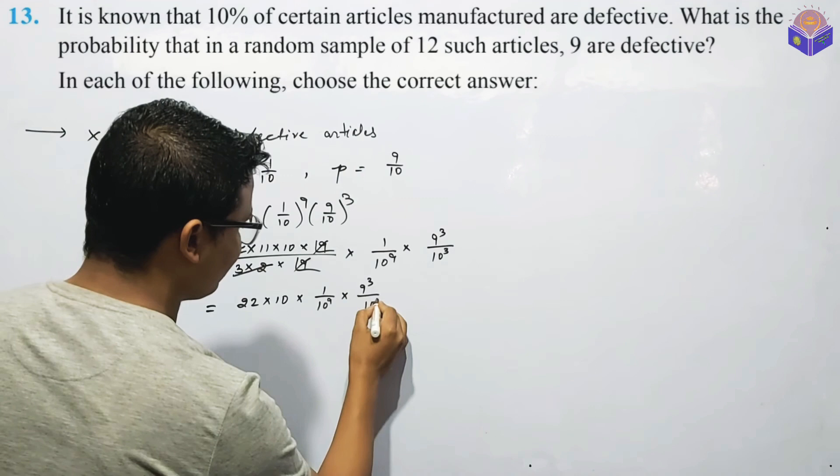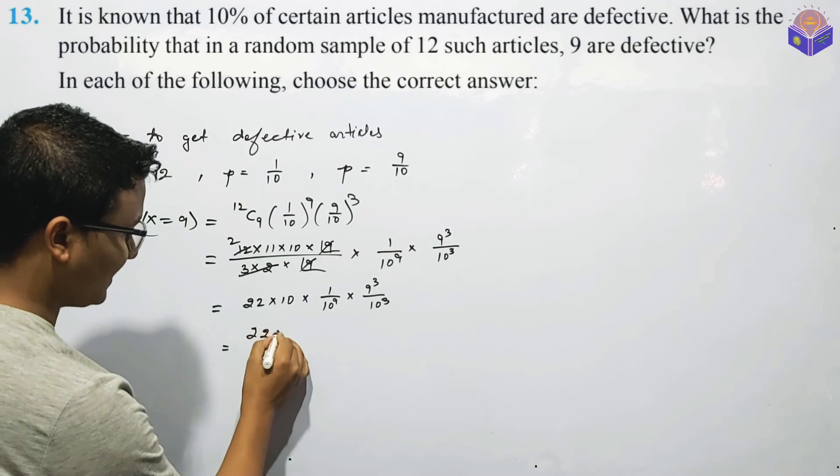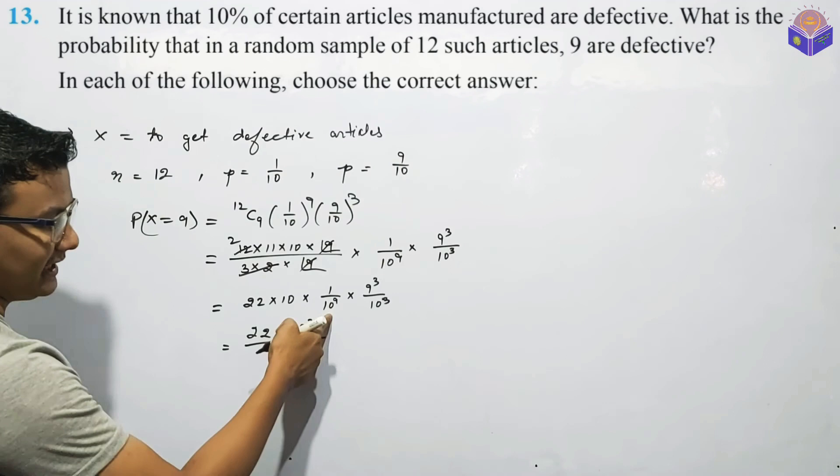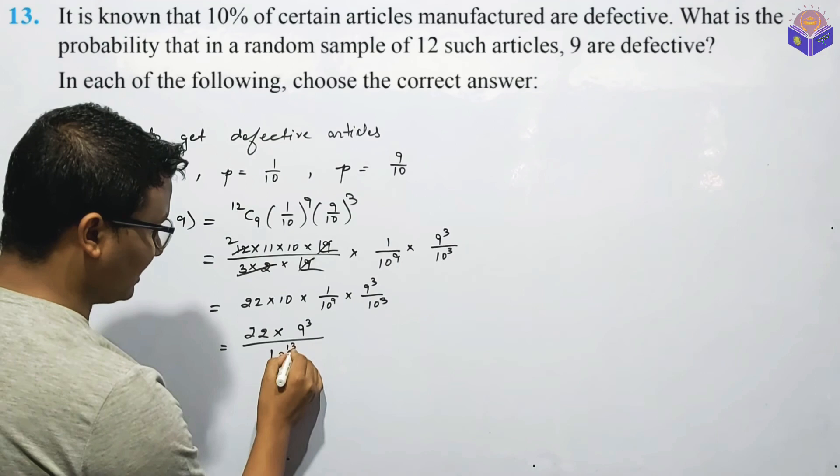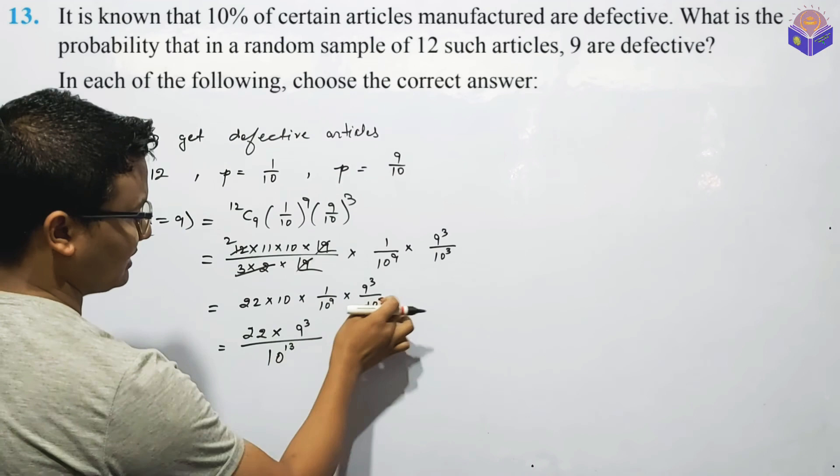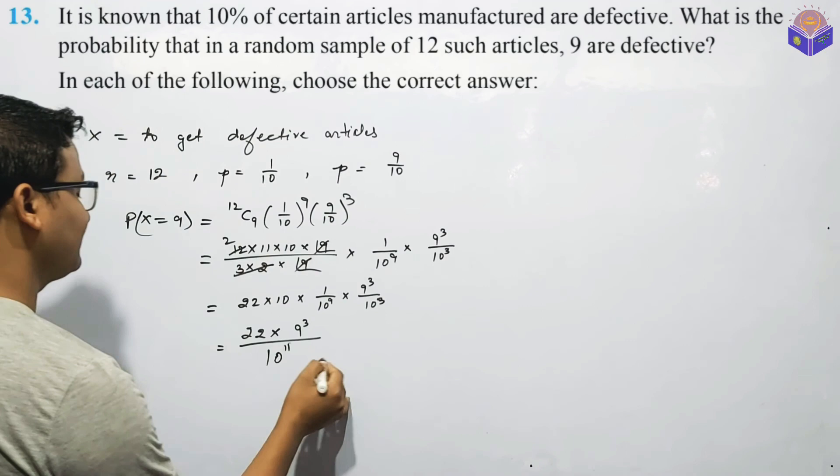If you want to see this channel, you can see this 2 into 9 cube. If you want to see this 3 cube, then you can see 10 to the power 14. 14 to the power 3, then 10 to the power of 12. We have to get 10 to the power 11.